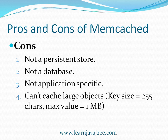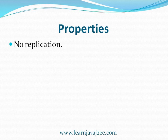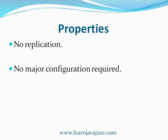There is one constraint: you cannot store data whose value size is more than 1 MB — that is the maximum limit for a value. The key size can be a maximum of 255 characters. These are the constraints we have with the Memcached server. Another drawback or property of Memcached is that it does not provide replication. There is no major configuration required when starting the Memcached application — we will see how to set it up on Windows and Linux.